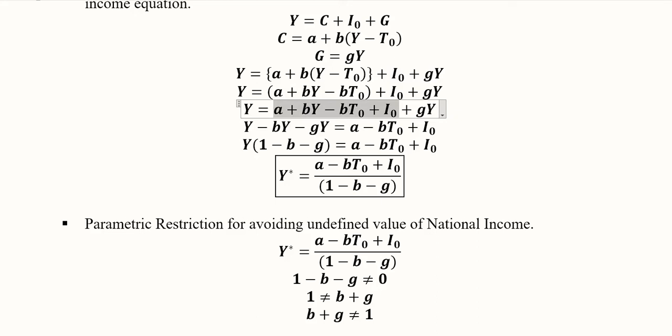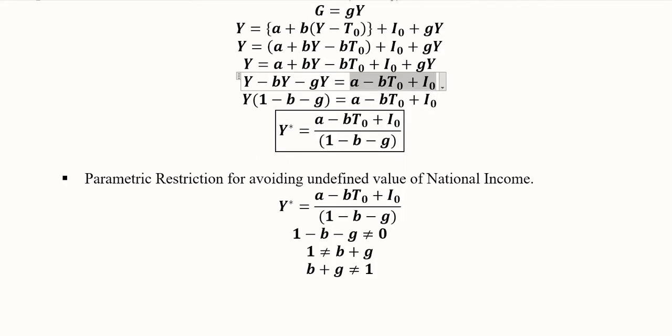And definitely we would like to extract the value of Y which is the endogenous variable. And other terms are basically coefficients, parameters or exogenous variables. That is T₀ and I₀ in this case. Taking Y common out of all the terms that had Y in them, then we will get this term as a multiple of Y and then Y status can be extracted.